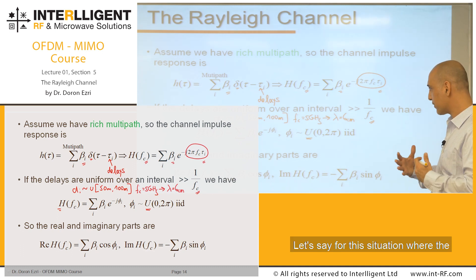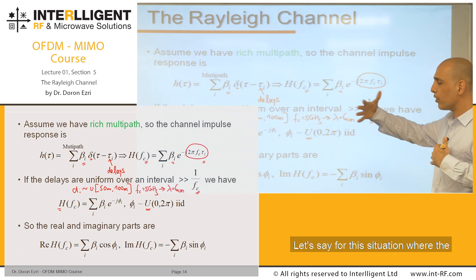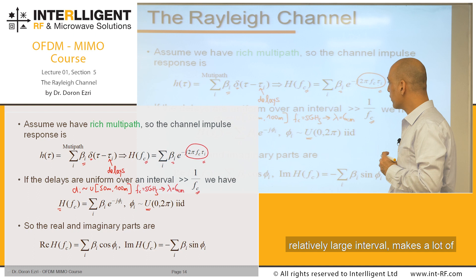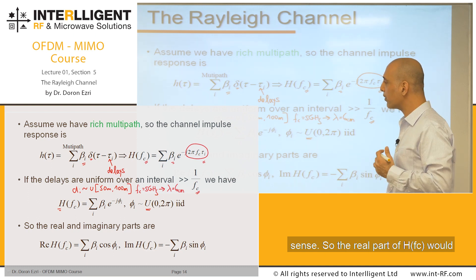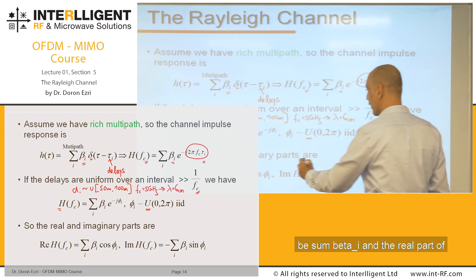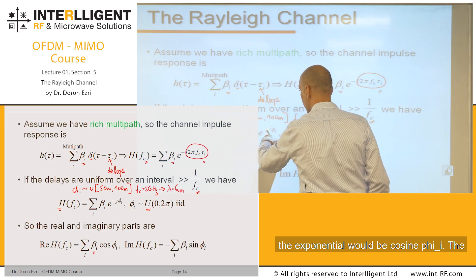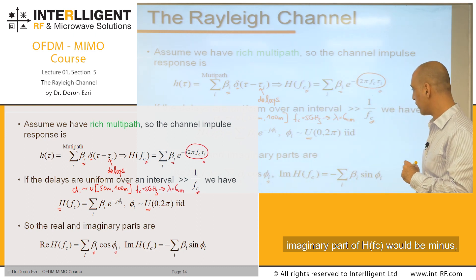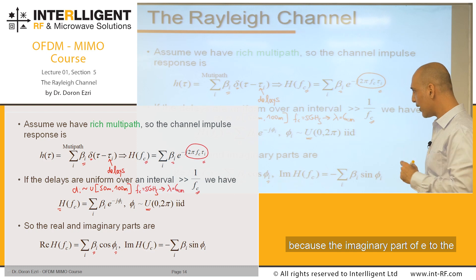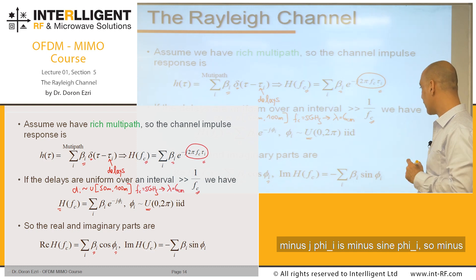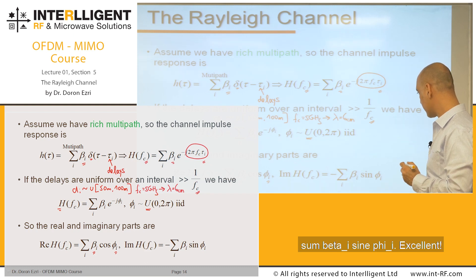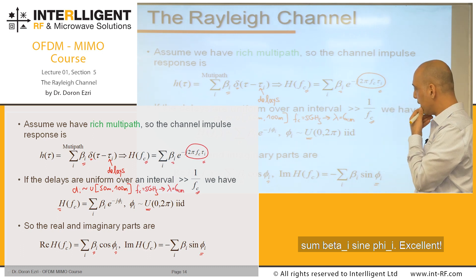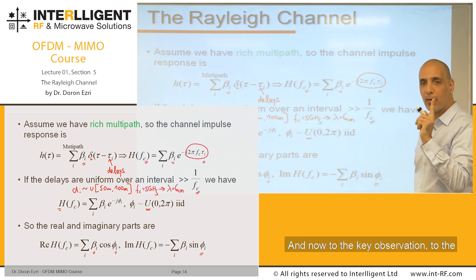Makes sense for this situation where the path length is uniform over a relatively large interval. So the real part of H(fc) would be sum of beta_i*cos(phi_i). The imaginary part of H(fc) would be minus sum of beta_i*sin(phi_i).